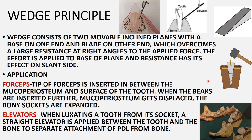Application of the wedge principle with forceps: the tip of the forceps beak is inserted between the mucoperiosteum and the surface of the tooth. As the beak is advanced further toward the root, the mucoperiosteum is displaced, expanding the bony socket. This causes slow separation of the periodontal ligament from the bone, which makes it easier to remove the tooth with forceps.